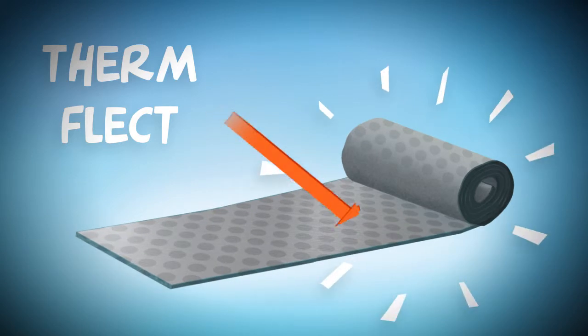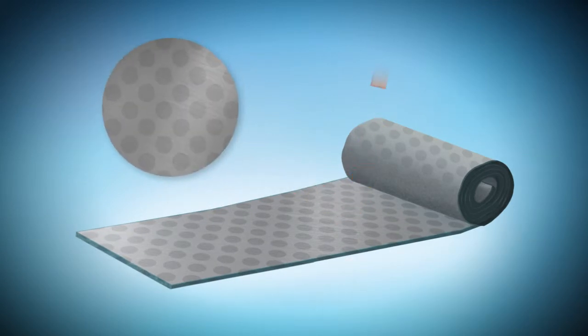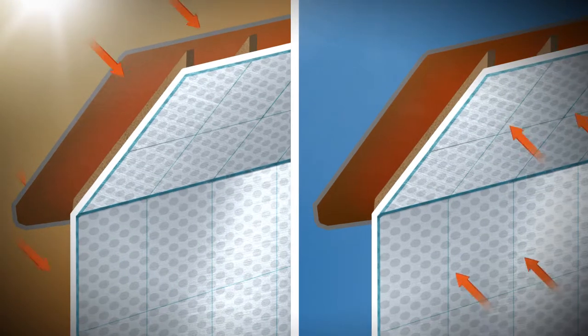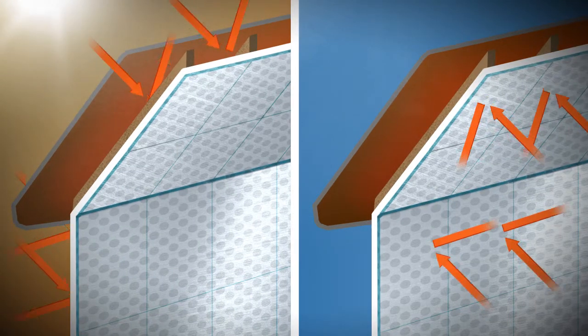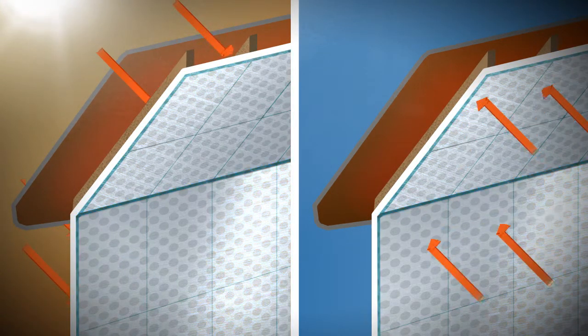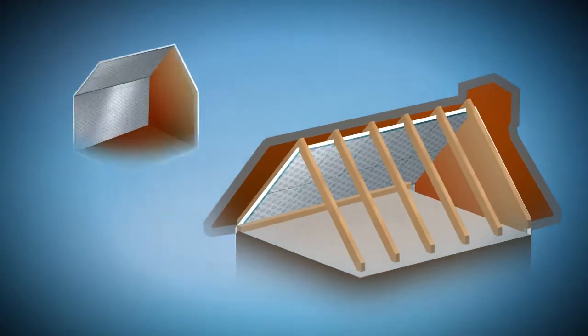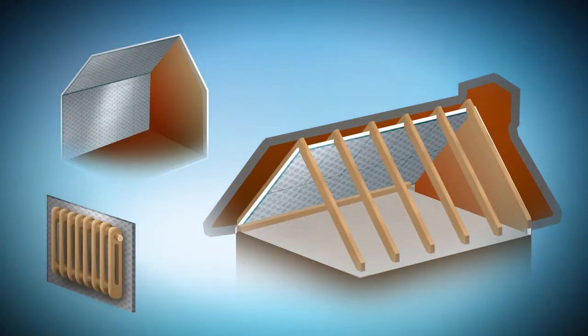Firmflect is a heat-reflecting barrier with a foil surface. It significantly reduces heat loss through the roof and walls. It can be used in lofts, garages and sheds as well as behind the radiators.